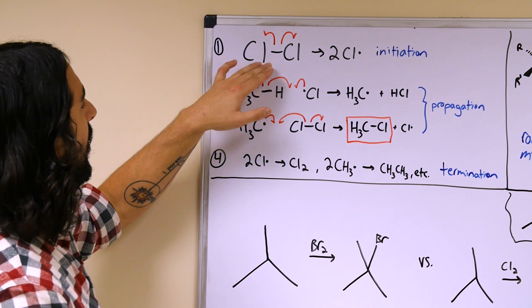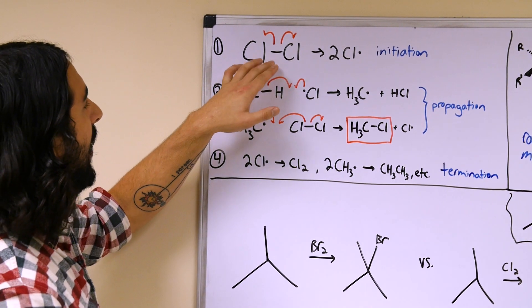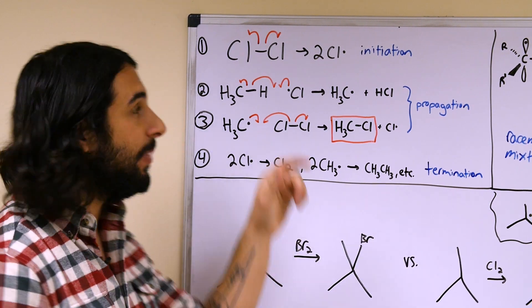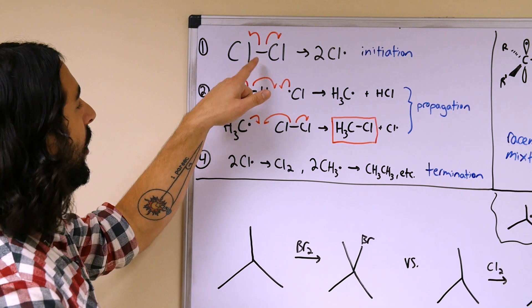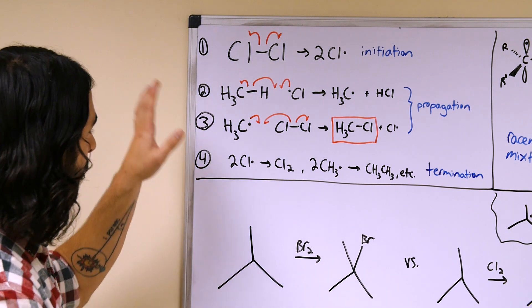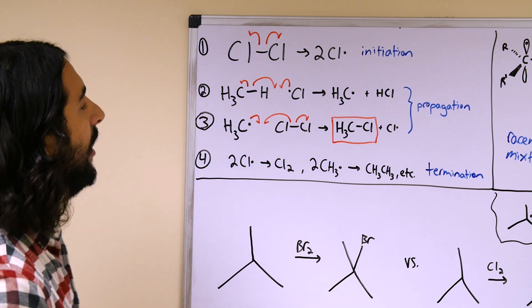This Cl2 molecule can dissociate into two chlorine radicals. This is the initiation step because we have a covalent species going to two radical species. Now what can happen here is a chlorine radical is a pretty unstable species.